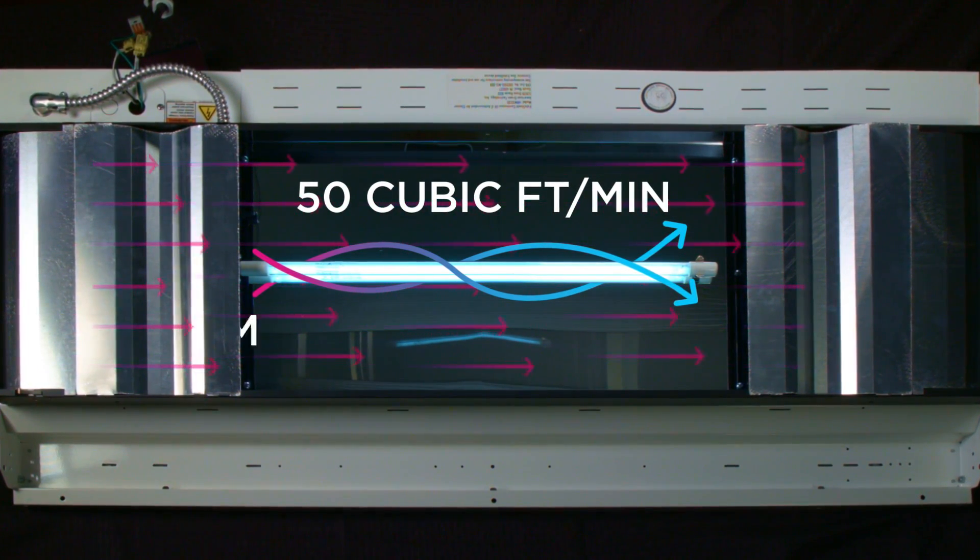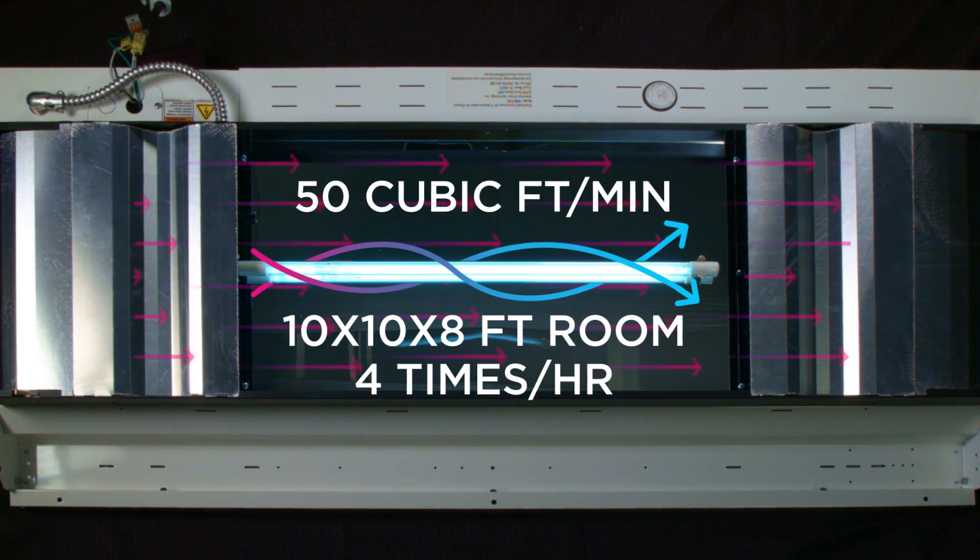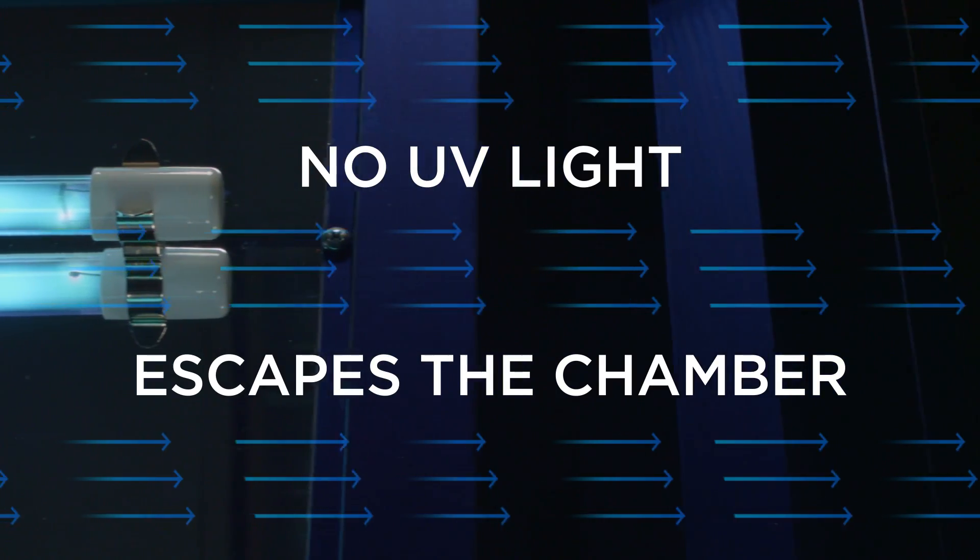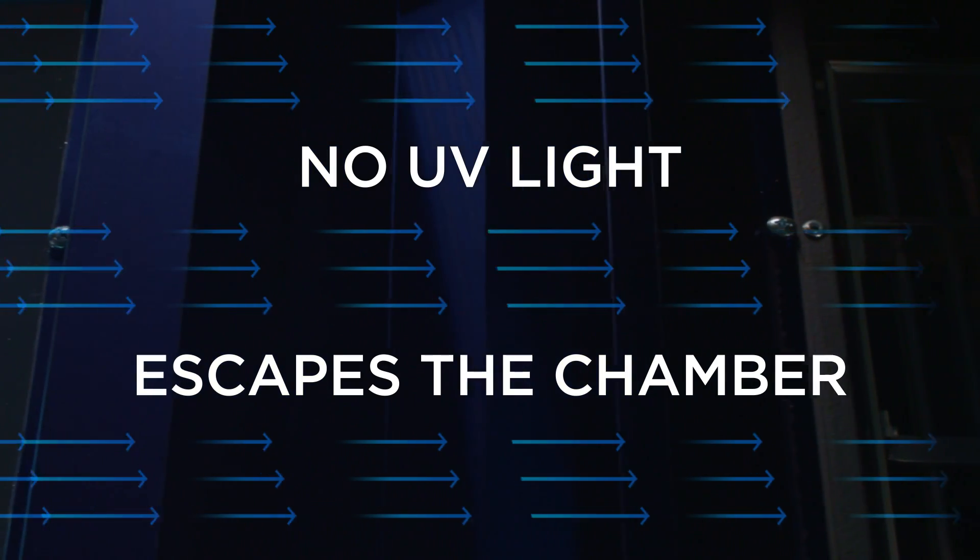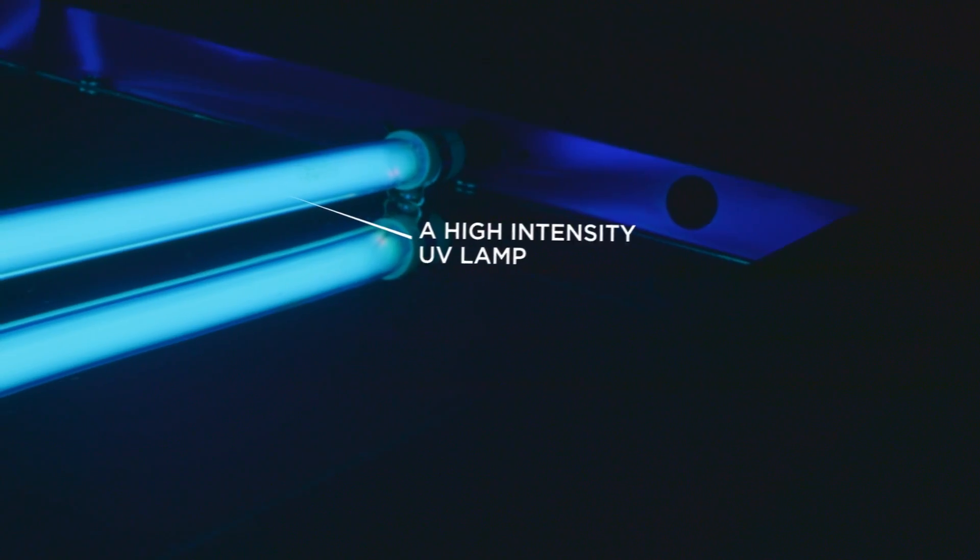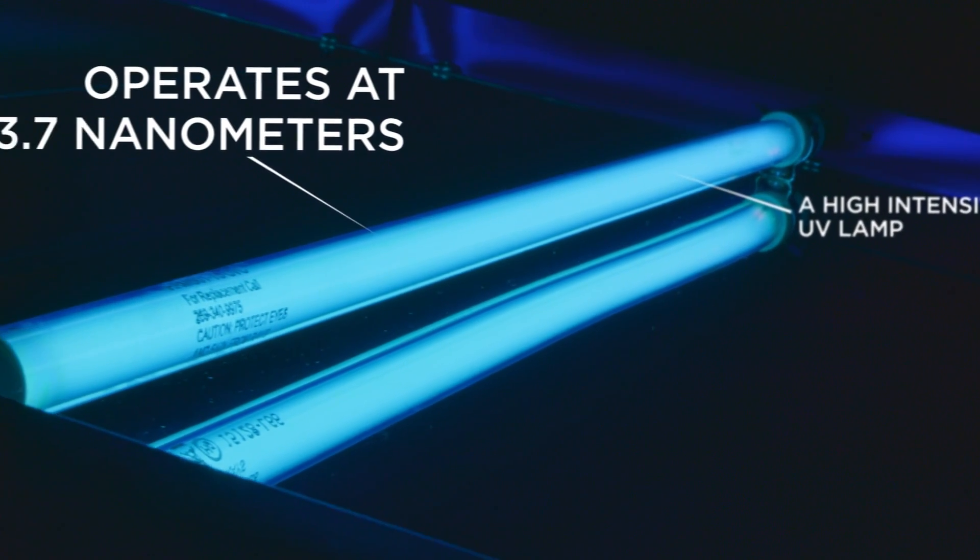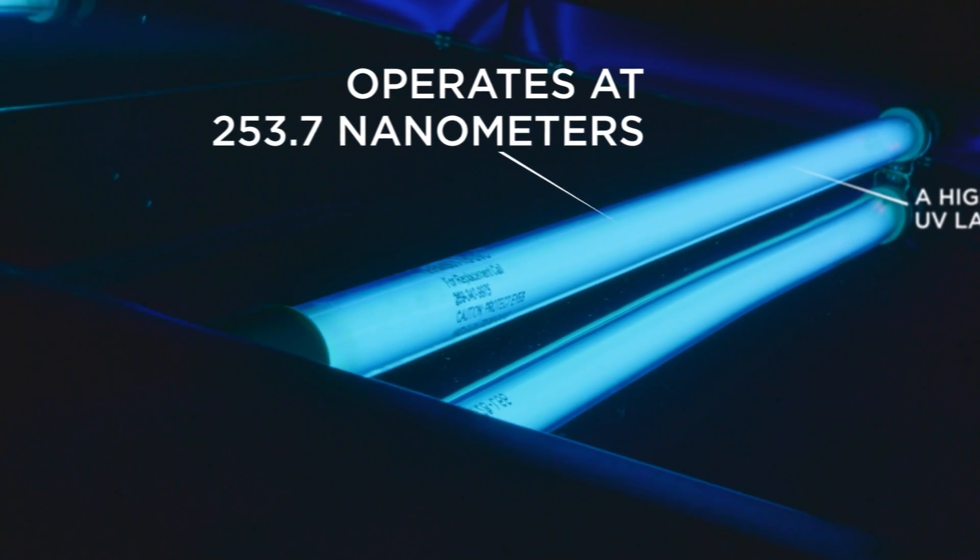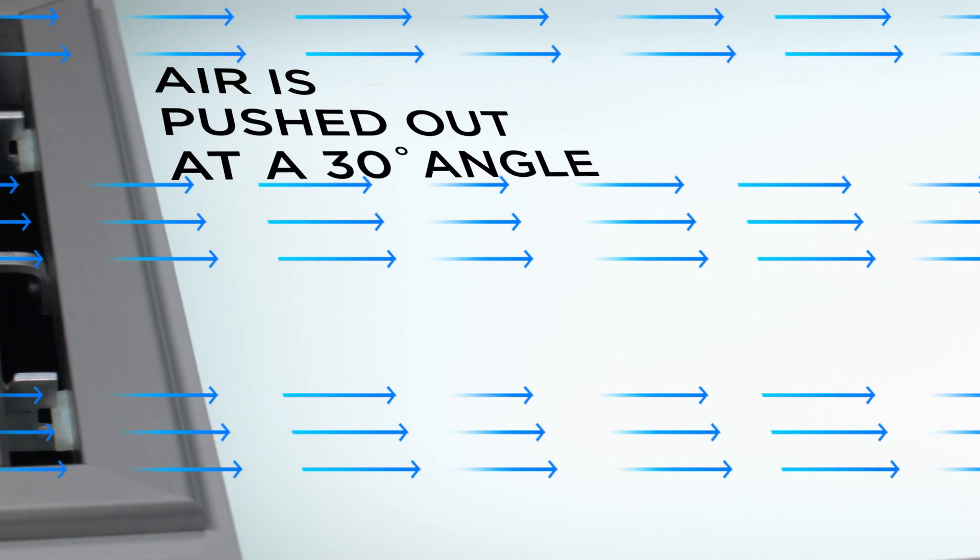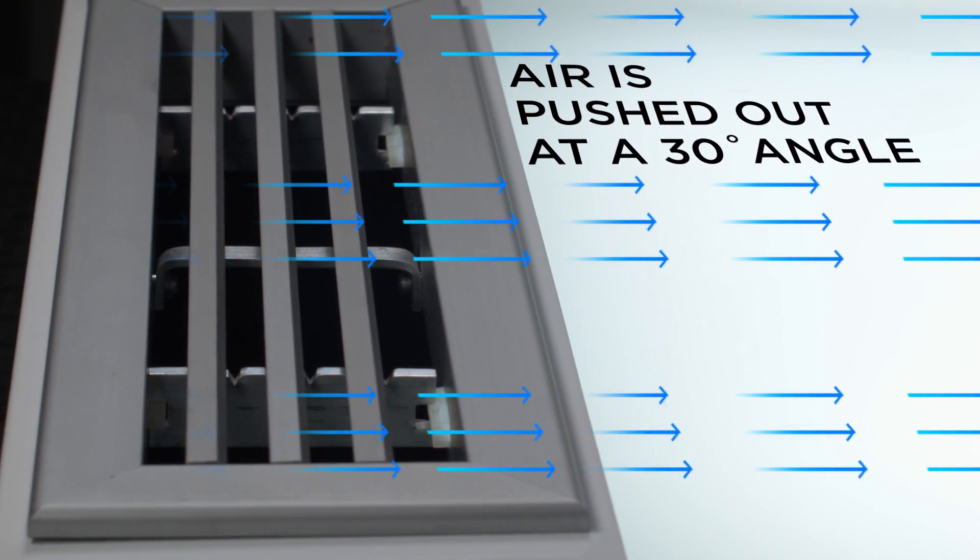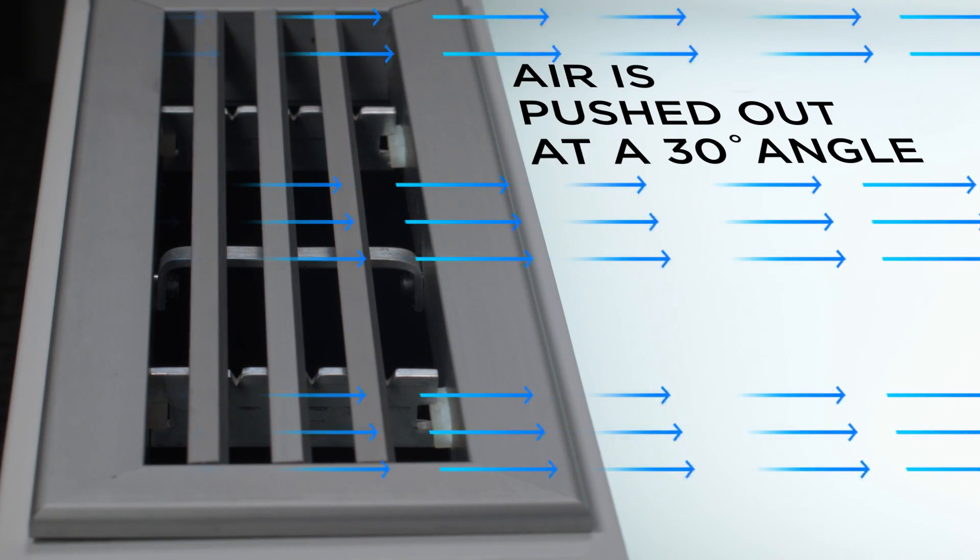It can treat a volume of air equivalent to a 10 by 10 by 8 foot room, four times per hour. The air moves through a set of safety baffles which prevent the UV light from escaping the chamber. Once in the chamber, a high-intensity UV lamp operates at the peak wavelength of 253.7 nanometers. The air is then pushed through an opposing grill at a 30-degree angle to promote circulation of the treated air throughout the room.